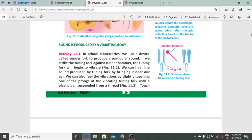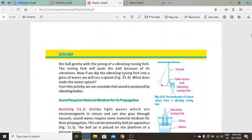Sound is produced by a vibrating body. In school laboratories, we use a device called tuning fork to produce a particular sound. When we strike the tuning fork against a rubber hammer, it starts to vibrate and we can hear the sound by bringing it near our ear. We can also feel the vibrations by slightly touching it.